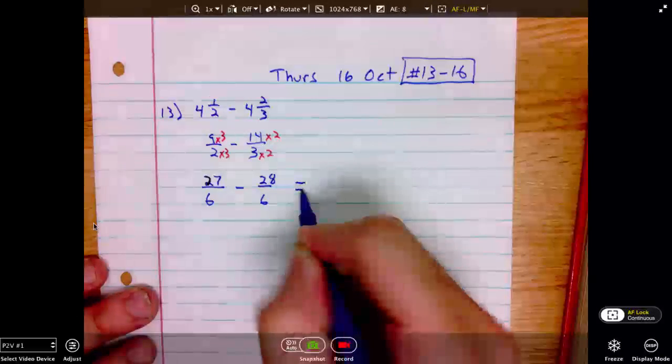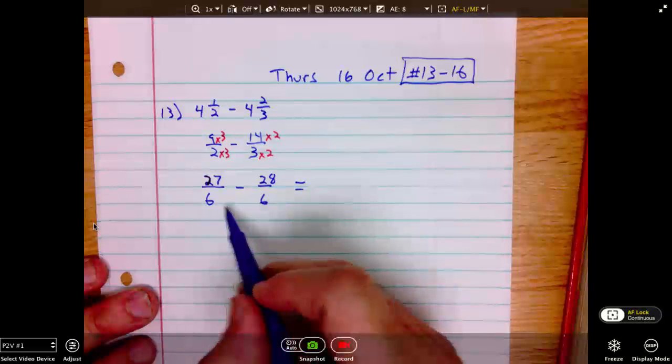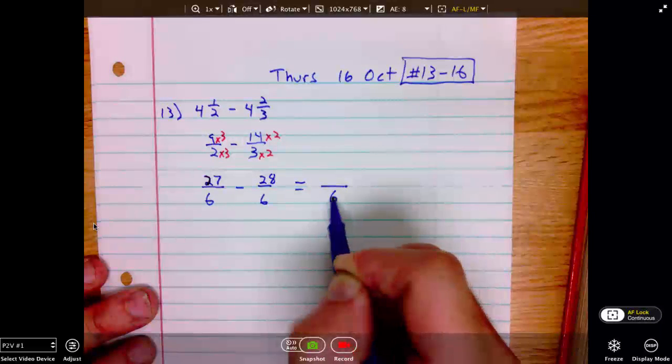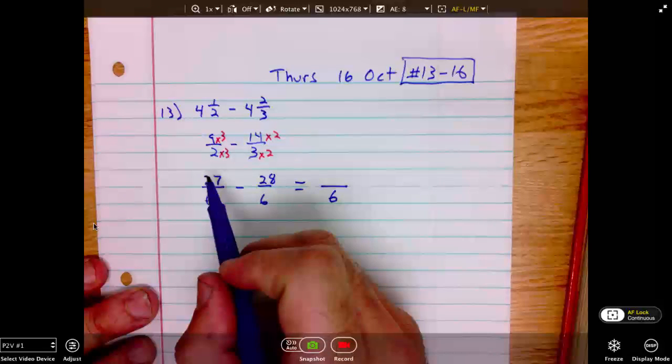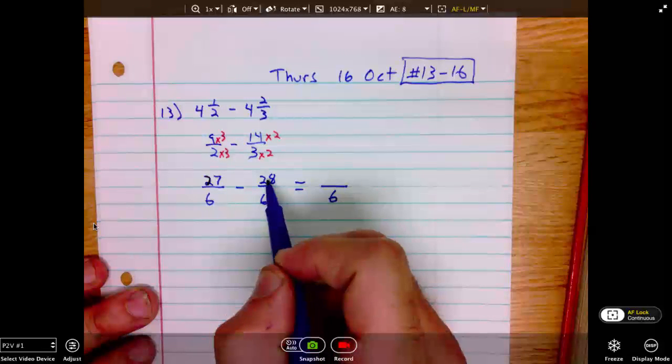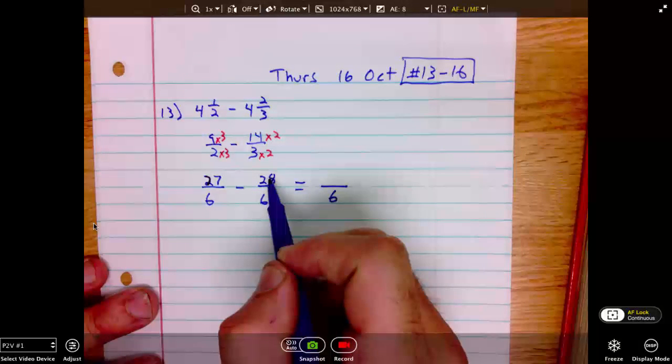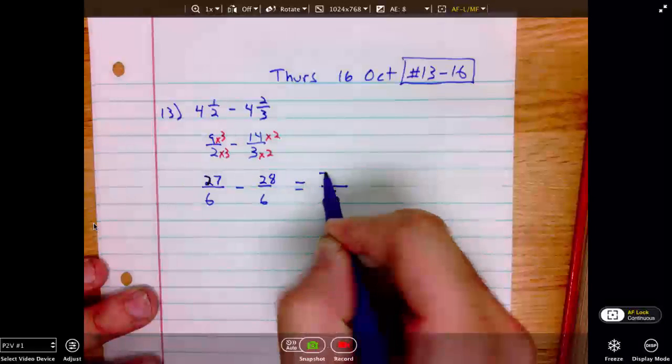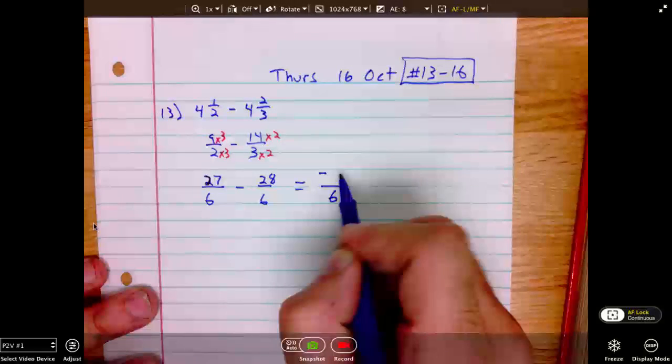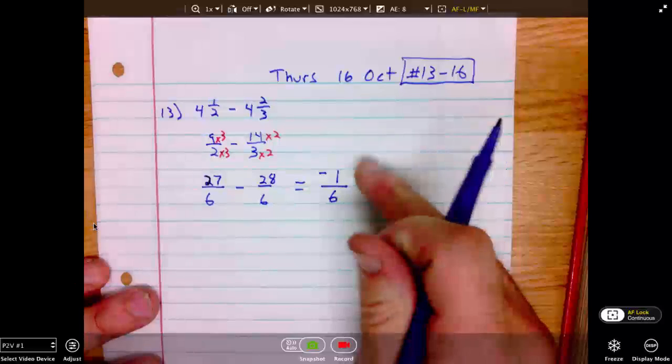We're prepared to subtract. We have the common denominator. We keep the denominator the same. Now we're left with 27 minus 28. Well, the larger number is second. So the result is negative. 27 minus 28 is a negative 1. Our answer is a negative 1 sixth.